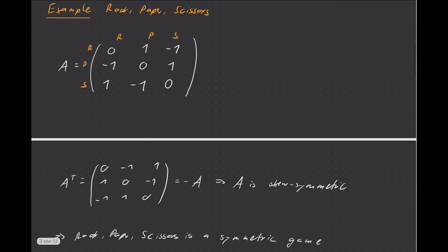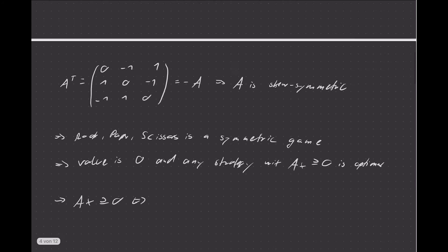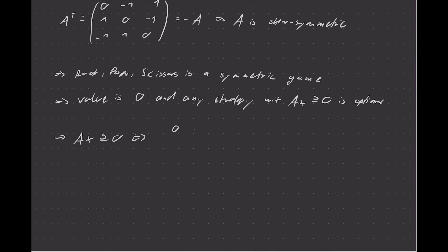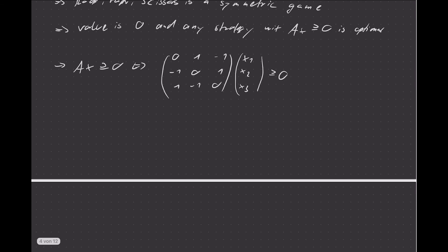Let's write down A again: A is the matrix [0, 1, −1; −1, 0, 1; 1, −1, 0] times (x1, x2, x3)^T, which needs to be ≥ 0. That translates into three inequalities: x2 − x3 ≥ 0, then −x1 + x3 ≥ 0.